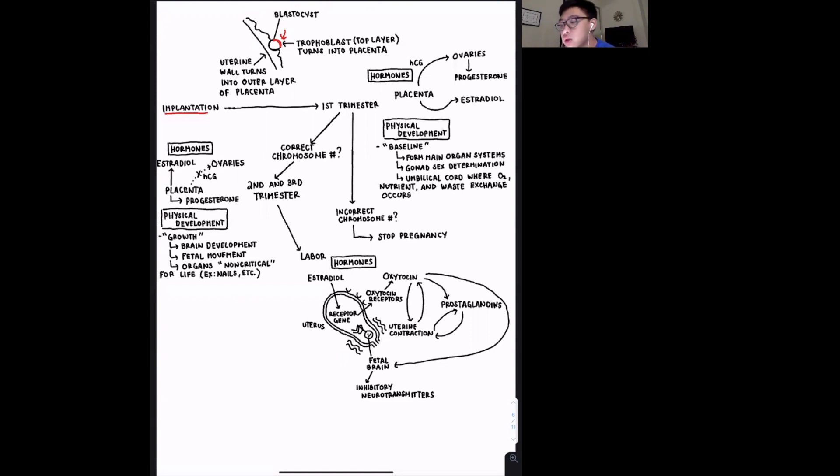The second and third trimester is characterized by, for physical development at least, mainly by growth, where you have brain development, fetal movement, and organs that are not critical for life are going to develop here. For hormones, the placenta will no longer secrete HCG, and that's because it can develop its own progesterone. So it's the placenta itself that's producing progesterone, not the ovaries. And then it is still secreting estradiol, as you see right here.